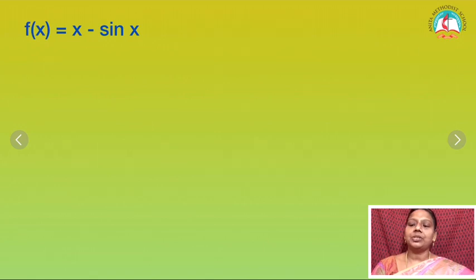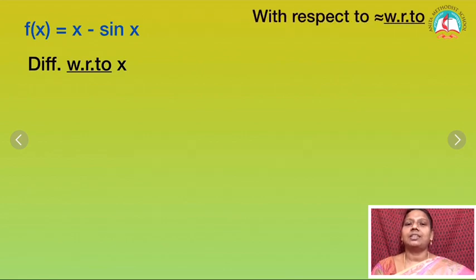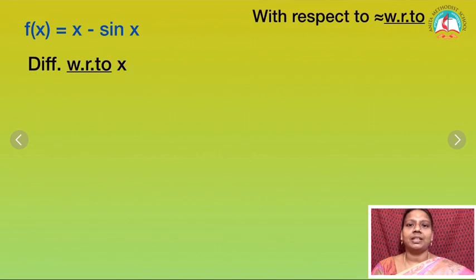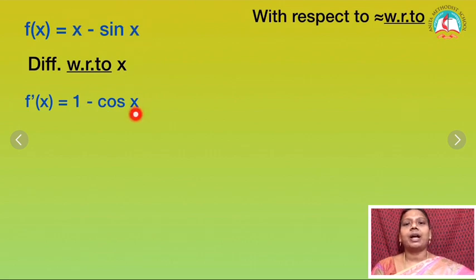Now let me do some exercise problems. The first one: f of x is equal to x minus sin x. I have to differentiate with respect to x — that is what w.r.t. means. Always we have to differentiate with respect to the right side variable. The right side variable here is x. I have x and the second term is sin x. Differentiating: x differentiation is 1 and sin x differentiation is cos x. I just write that minus. So the answer is 1 minus cos x.